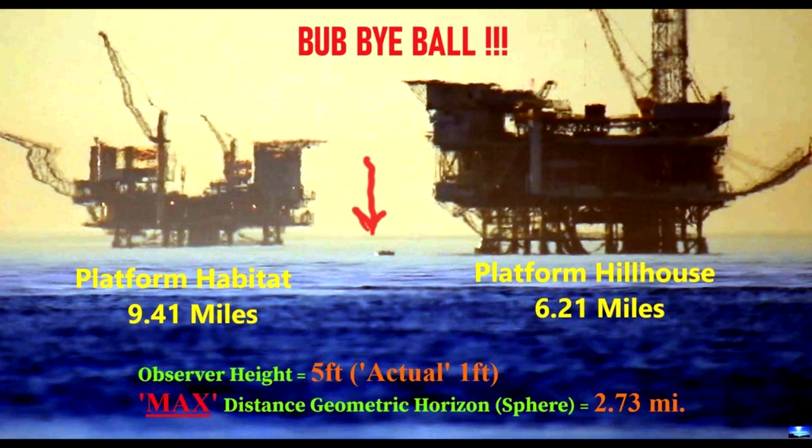The unstated assumption in both of these is that no atmospheric effects are in play, although flat earthers might argue that the unstated assumption in the globe-supporting one is that perspective cannot make things disappear bottom-up. So, if it is possible to show that there are atmospheric effects in play when it comes to the black swan image, then the black swan image doesn't satisfy the unstated assumptions, which means the conclusion cannot follow from the premises, because an unstated assumption is like an unstated premise.